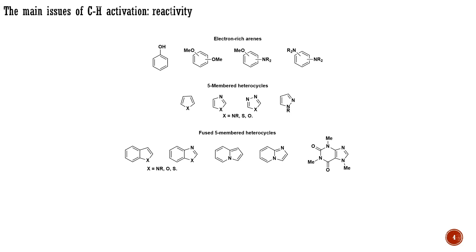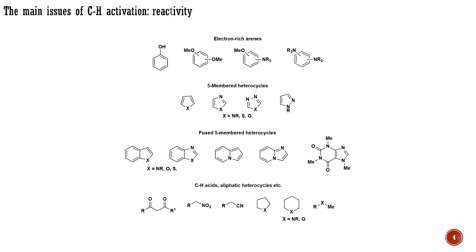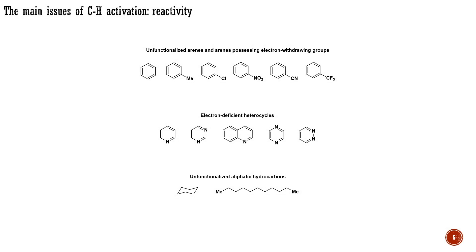The reactivity trends in CH activation are very similar to those observed in electrophilic aromatic substitutions. You will understand the reasons controlling the reactivity in SP2 hybridized CH bonds when we come to the mechanisms of CH activation. Among aliphatic systems, the most reactive compounds are the so-called CH acids, saturated heterocycles, ethers, and related aliphatic compounds possessing a heteroatom. In contrast, electron-deficient arenes and unfunctionalized alkanes or paraffins are quite inert. The reactivity of these systems can be significantly enhanced by the introduction of special functional groups. Due to their pronounced inertness, these systems are frequently used as solvents in homogeneous catalysis.